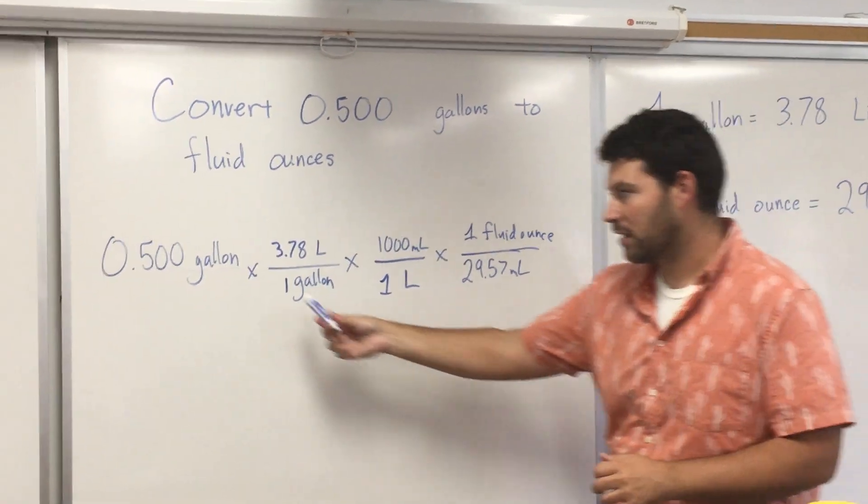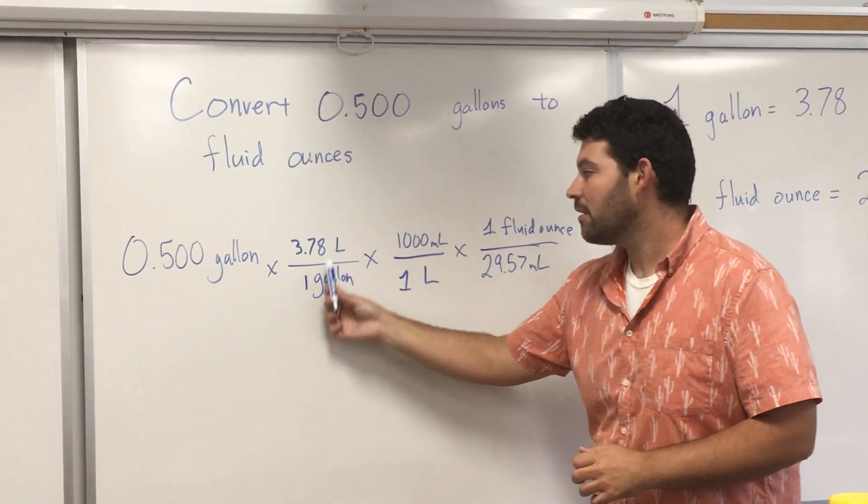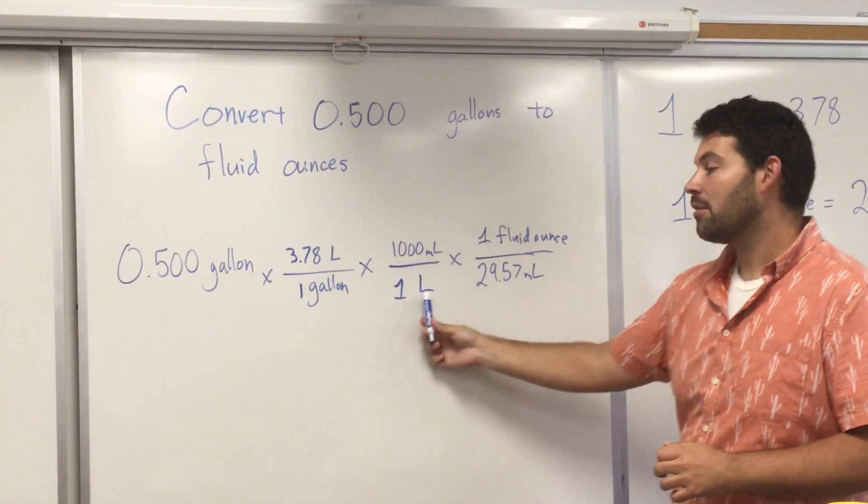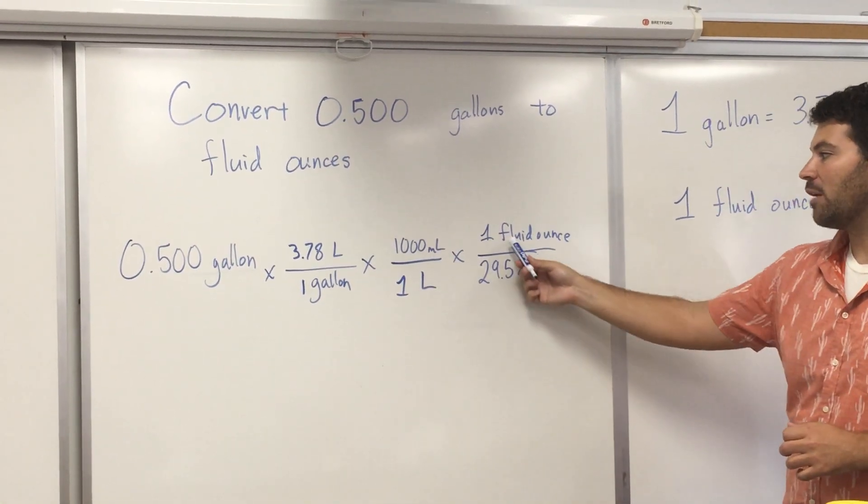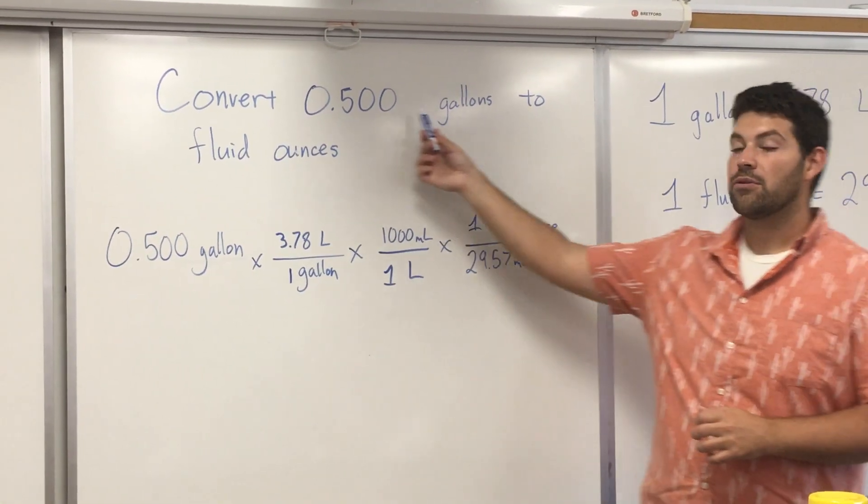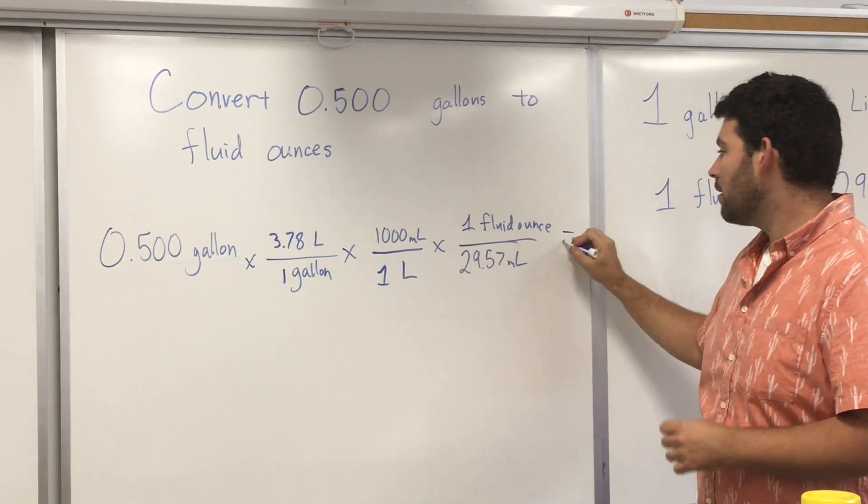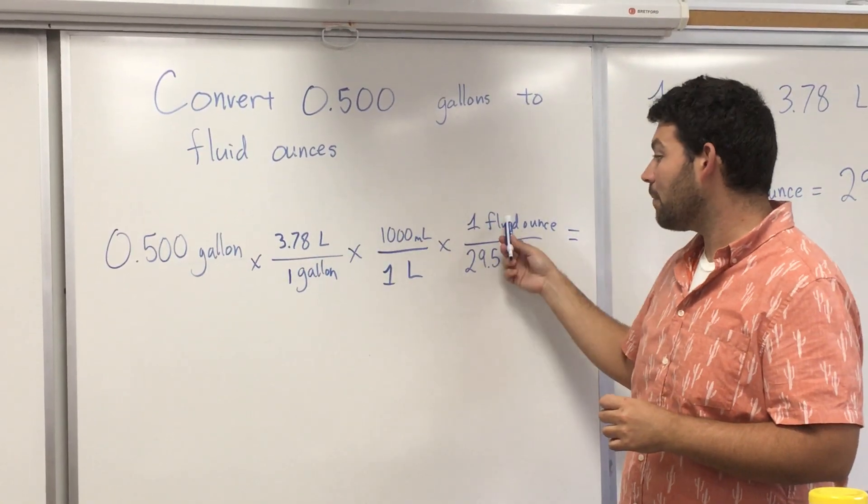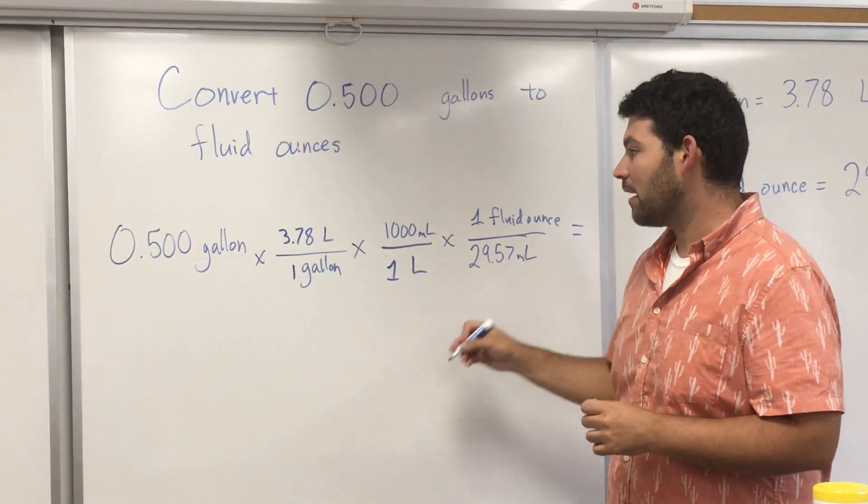So if I double check, my gallons will cancel out. My liters will cancel out. My milliliters will cancel out. I will be left with fluid ounces, which is what the problem asked for. I'm multiplying everything on top. I'm dividing by everything on the bottom.